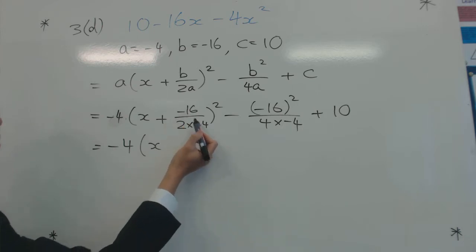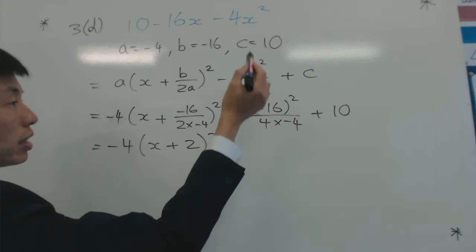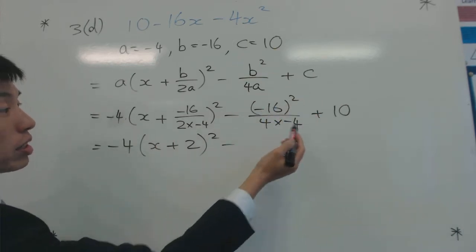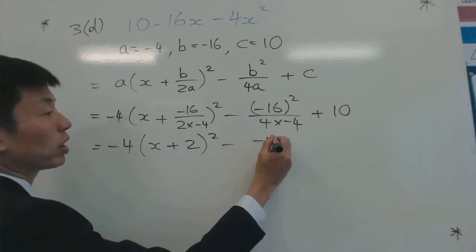Minus minus makes a plus, so that's going to be 16 over 8, which is going to be 2. And then instead of doing minus 16 times 16, I'm just going to borrow some of these numbers in the denominators to see if I can cancel it down to save me from doing long divisions.